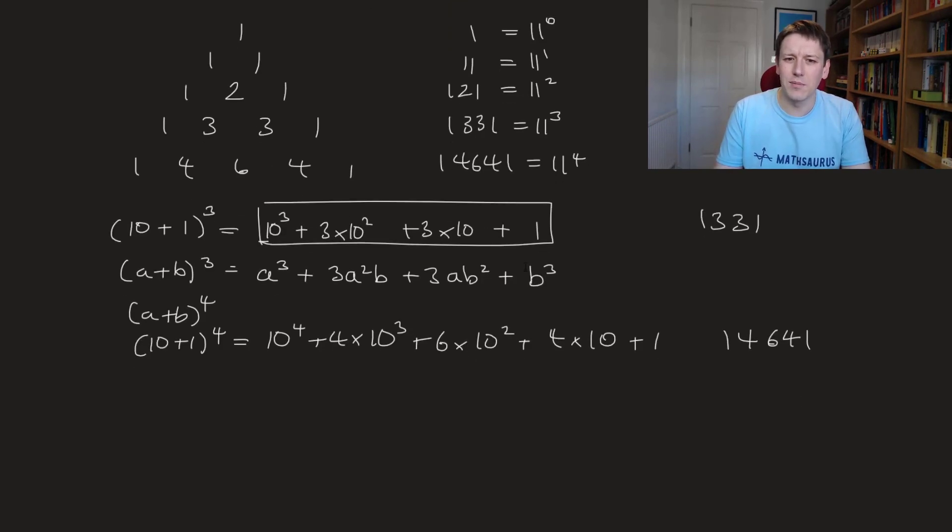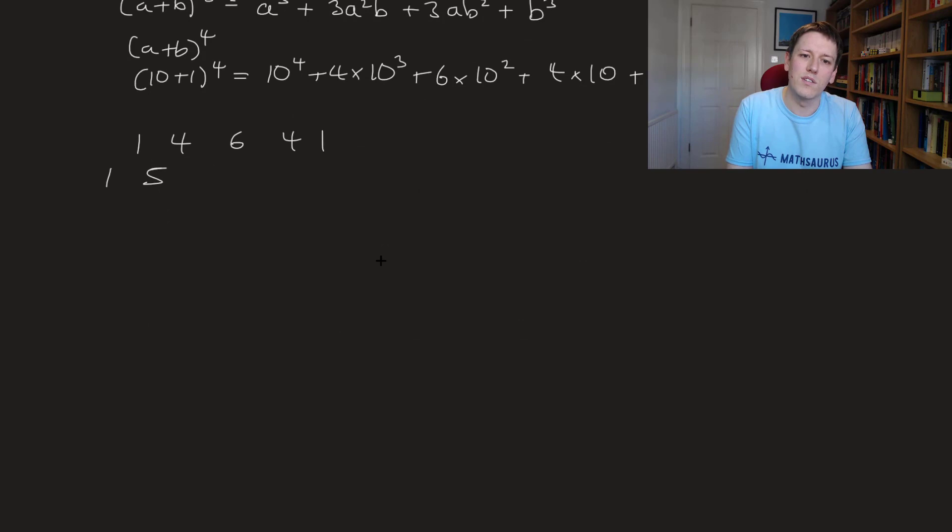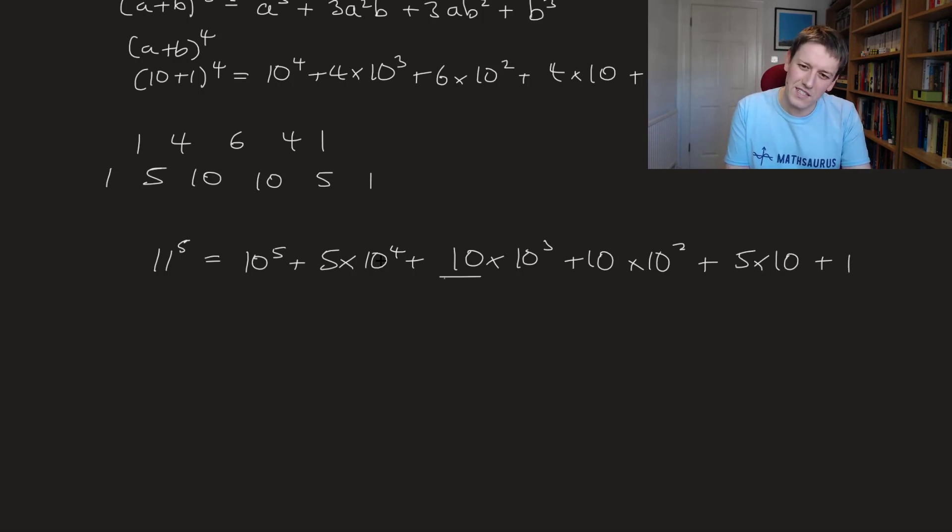Now, it does break down just a little bit if we go beyond this. Because if I look at the next row of Pascal's triangle, I would get 1, 5, 10, 10, 5, 1. So the corresponding result here is that 11 to the power of 5 is 10 to the 5 plus 5 times 10 to the 4 plus 10 times 10 to the 3 plus 10 times 10 squared plus 5 times 10 to the 1 plus 1. So the fact that these numbers are getting bigger than 10 means that they're not exactly the digits.